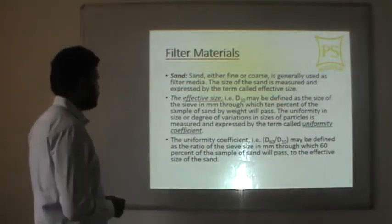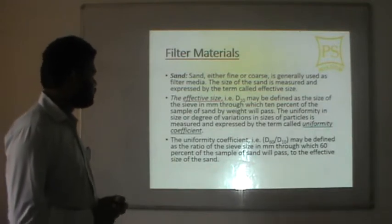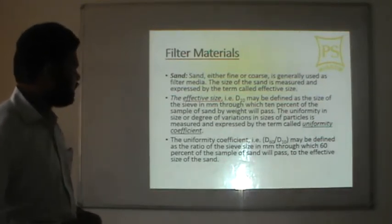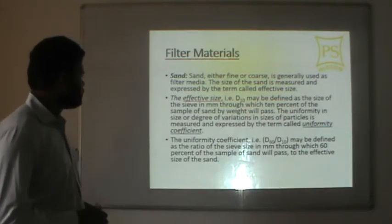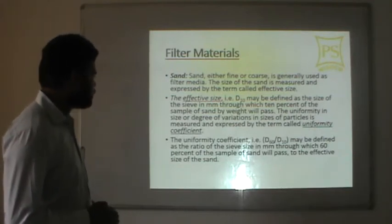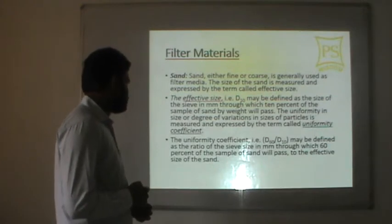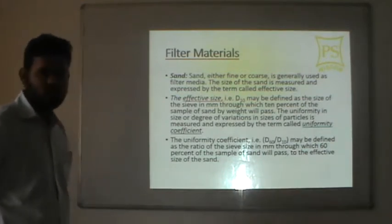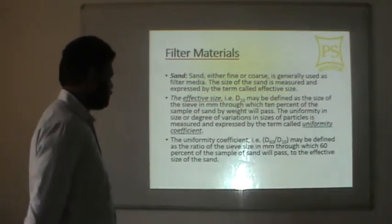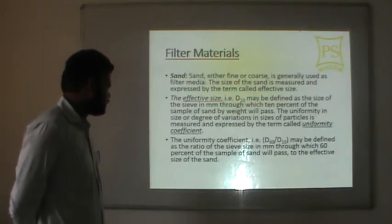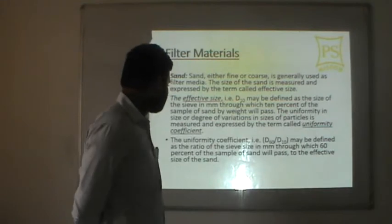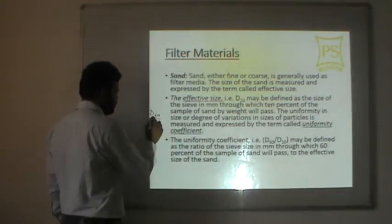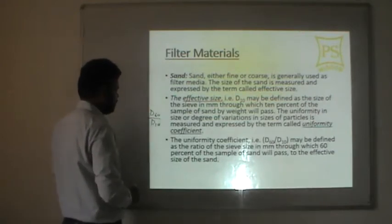Filter materials: sand, either fine or coarse, is generally used as filter media. The size of sand is measured by the effective size, d10, defined as the sieve size in mm through which 10% of the sand sample by weight will pass. The uniformity coefficient is d60/d10, defined as the ratio of the sieve size through which 60% of the sample will pass to the effective size d10. Effective size is d10 and uniformity coefficient is d60/d10.